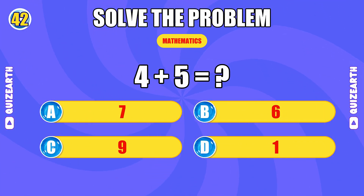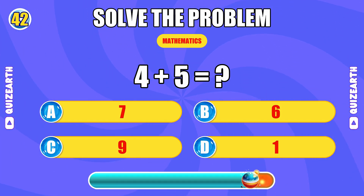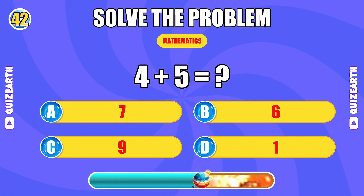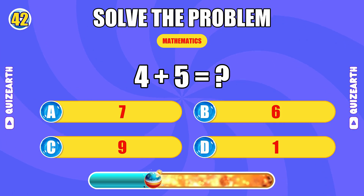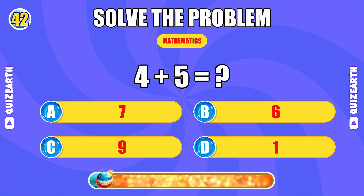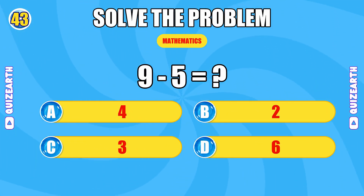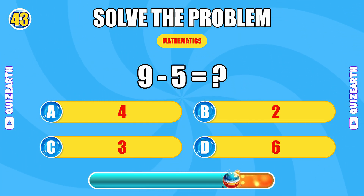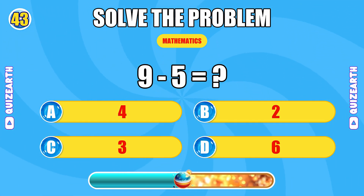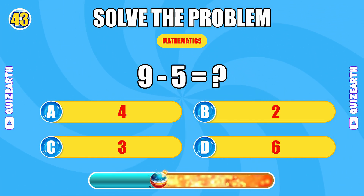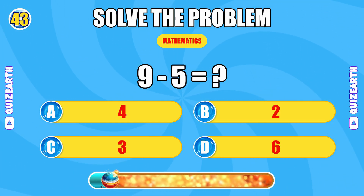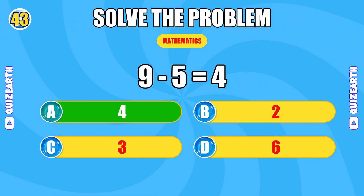What do you get when you add four and five? Still blazing — the answer is nine. What is nine minus five? Relentless — the answer is four.